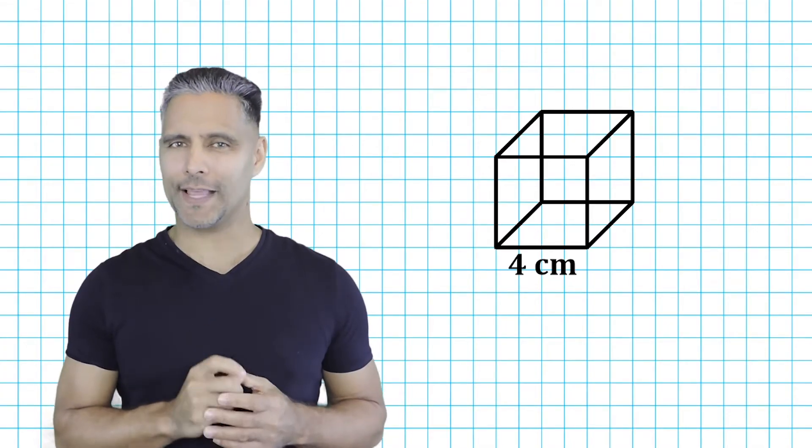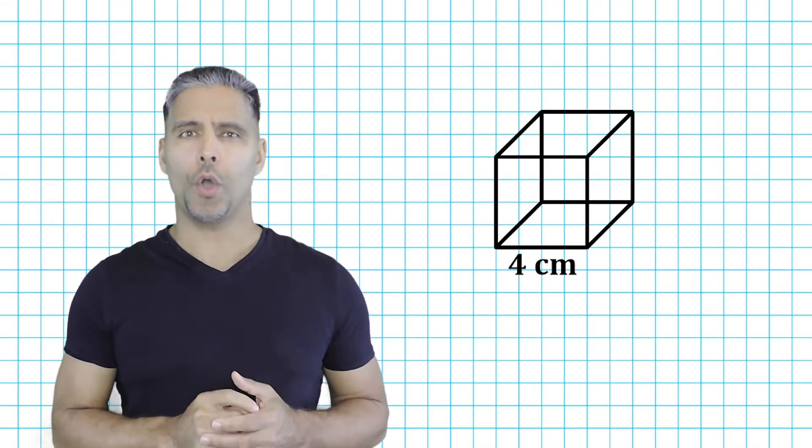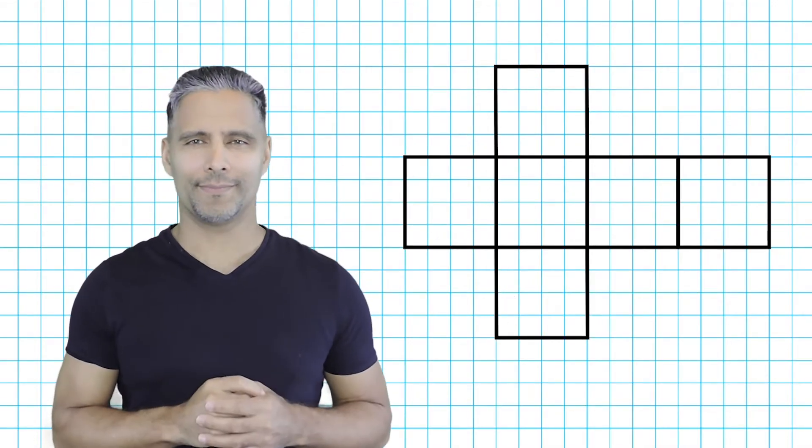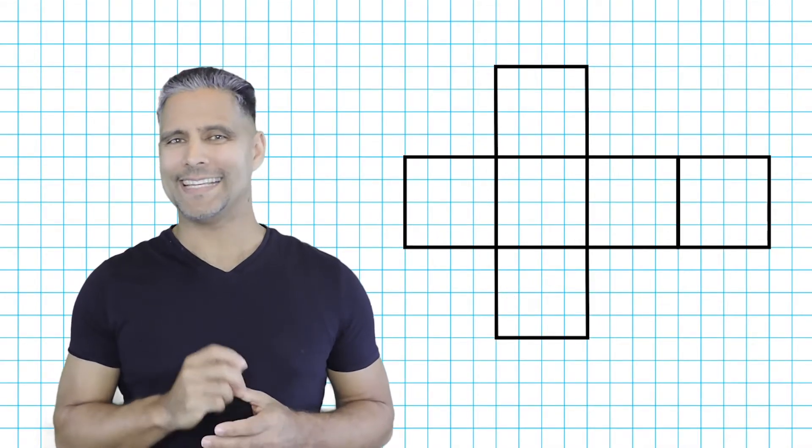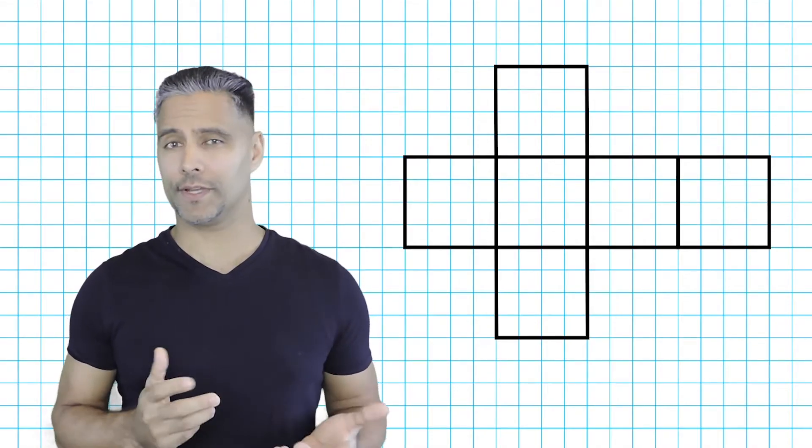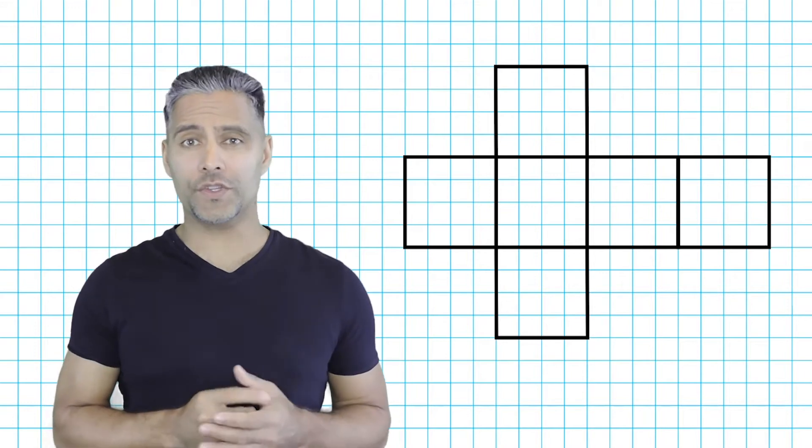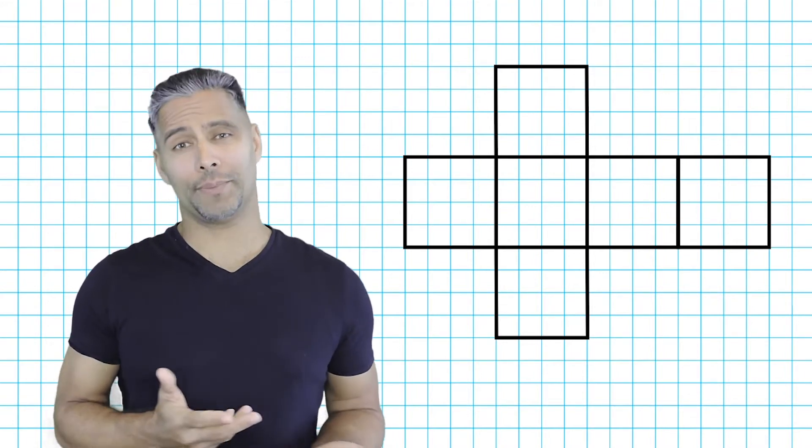Because surface area is a flat, two-dimensional measure, we are going to view our cube from a flat, two-dimensional perspective. We should notice that six congruent squares constitute the surface of any cube. So, we are basically finding the area of one square and multiplying that result by 6.